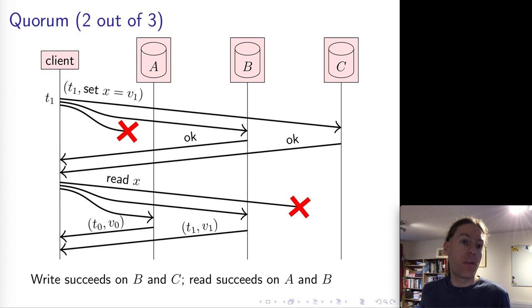And so in this case now, the client will receive responses from A and B. It will get the correct response that it was expecting from B because B has seen the write. It will get an outdated response from A because A didn't get the write. But at least one of the responses that the client got back has the updated value.